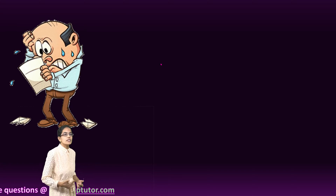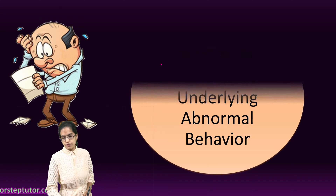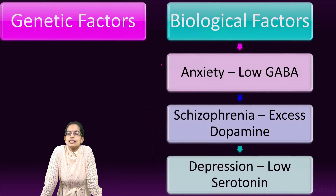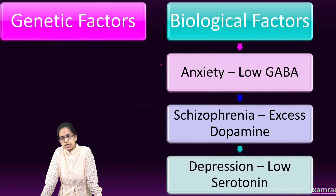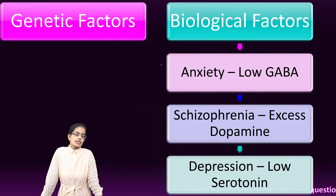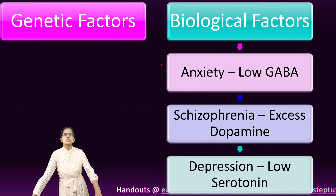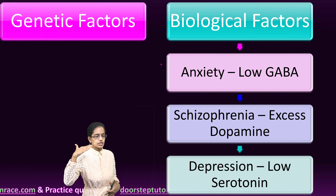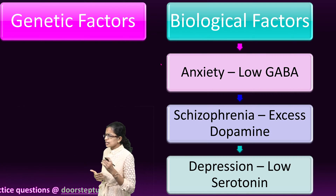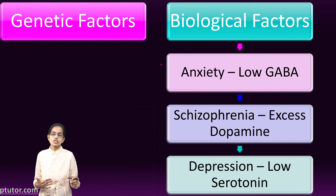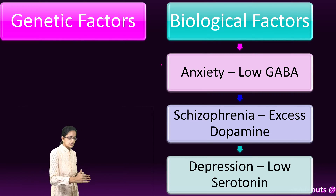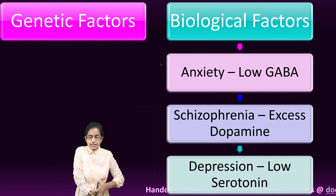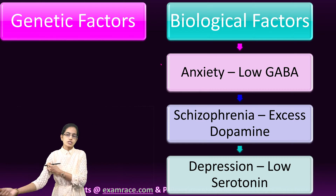What are the factors and models underlying abnormal behavior? Let's understand these factors first. These factors can be genetic or biological in nature. Genetic factors are linked mainly to mental retardation, mood disorders, and schizophrenia, and are carried from one generation to the next. It is believed that there is no single gene responsible for psychological disorders, but there have been strong cases suggesting genetic displacements seen across generations.